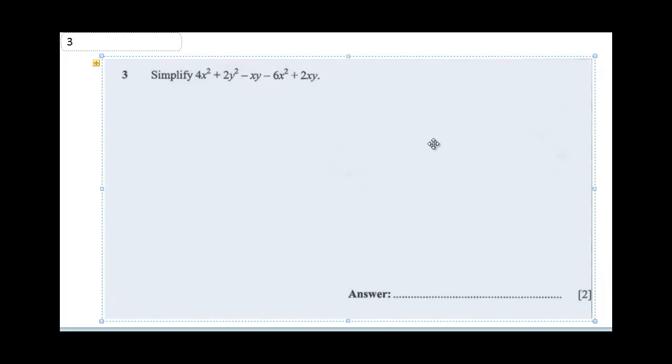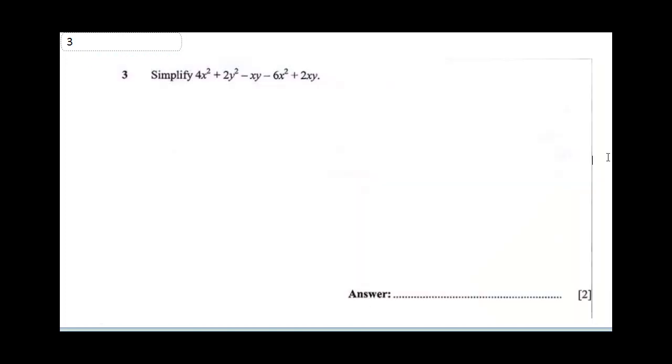Question 3 says simplify 4x² + 2y² - 2y² - 6x² + 2xy. To simplify this, let's collect like terms. This would be 4x² - 6x² coming over, then we'll have 2y² - xy + 2xy.